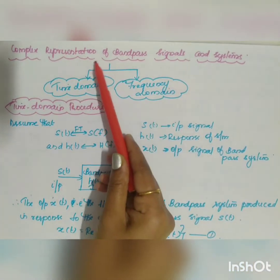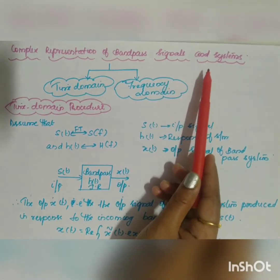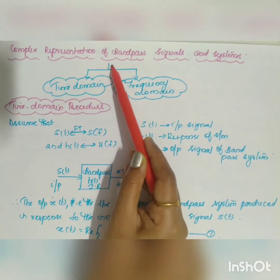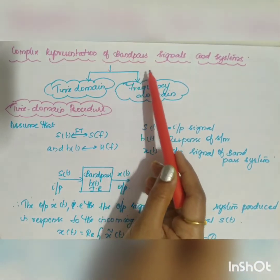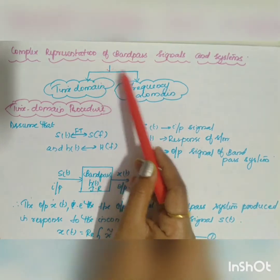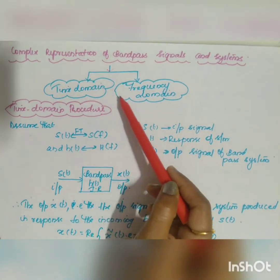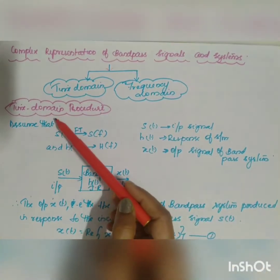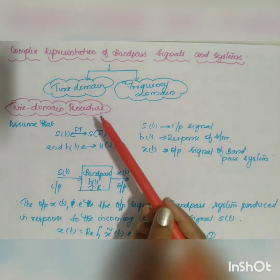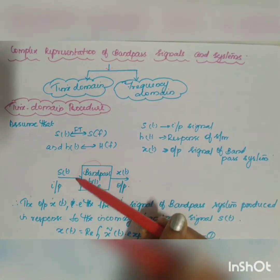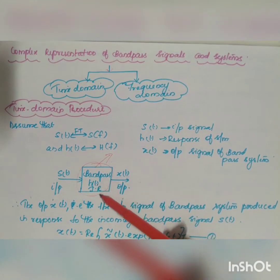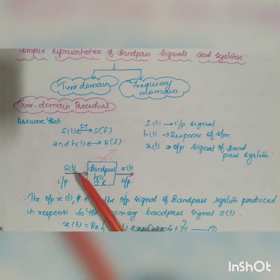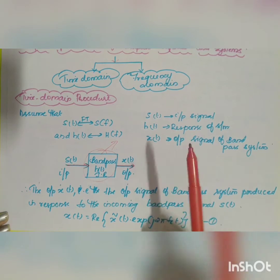The next topic is complex representation of bandpass signals and systems. This can be done in two methods: the time domain approach and the frequency domain procedure. For the time domain procedure, we assume a bandpass system with impulse response h(t), input signal s(t), and output signal x(t).